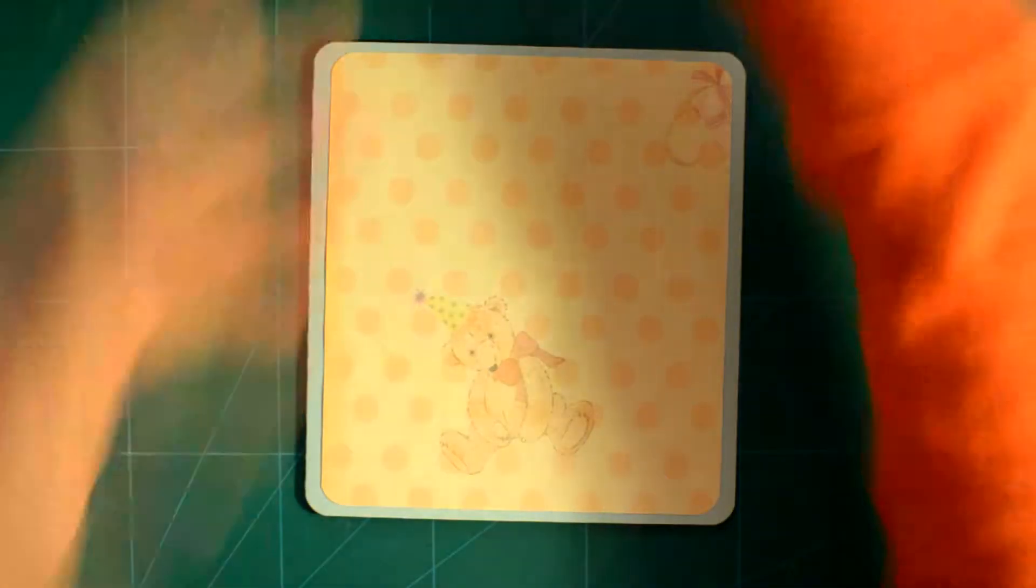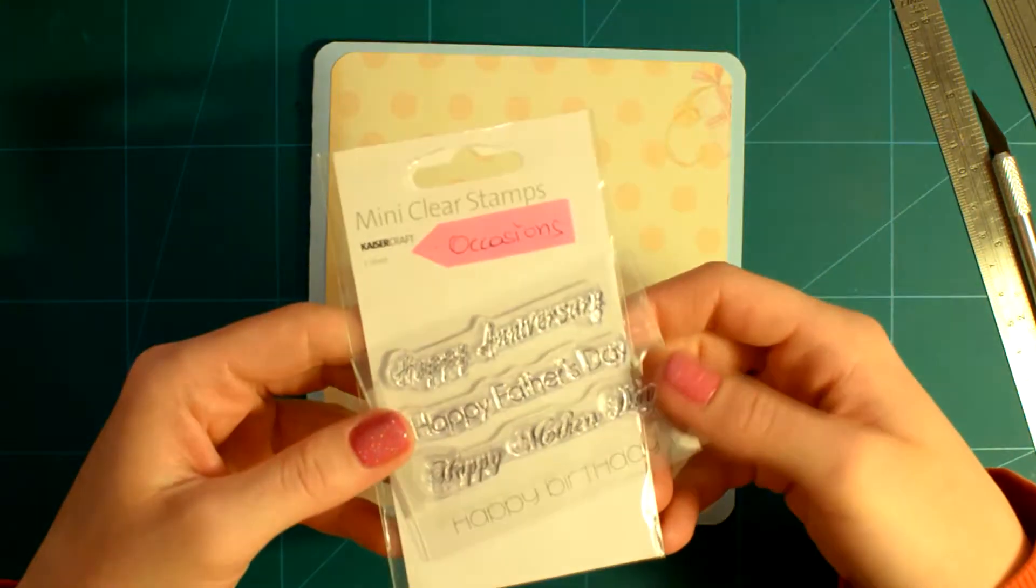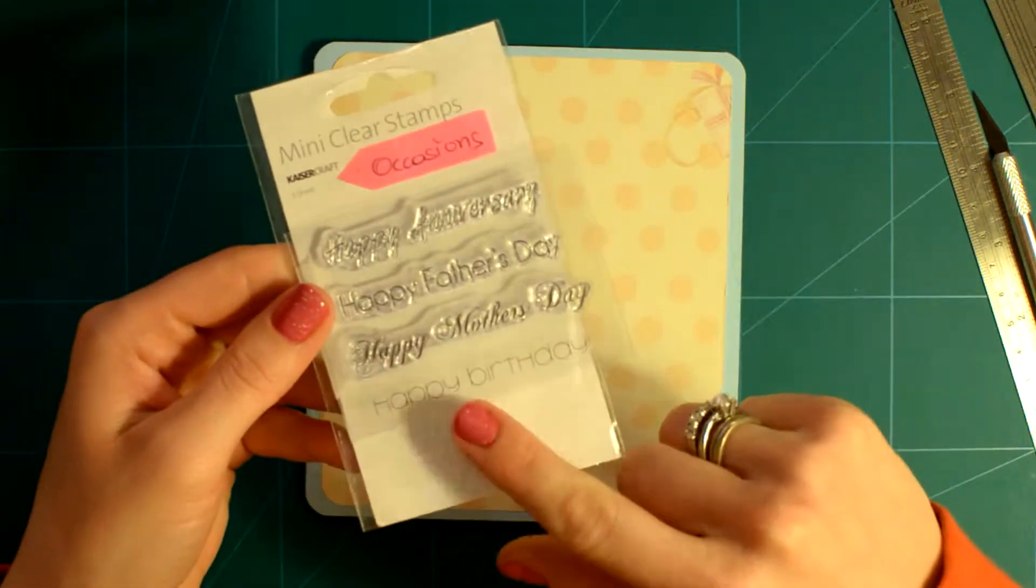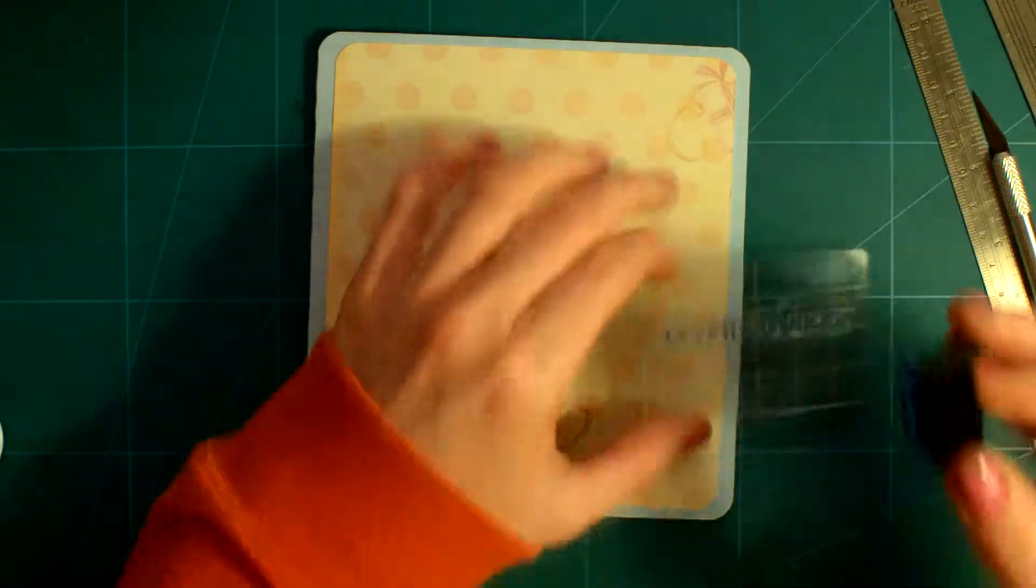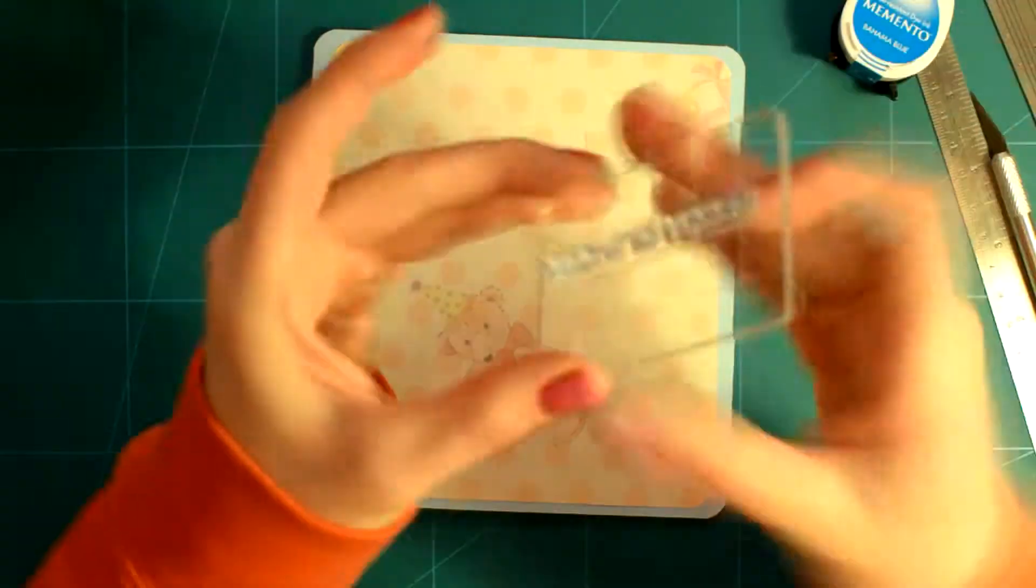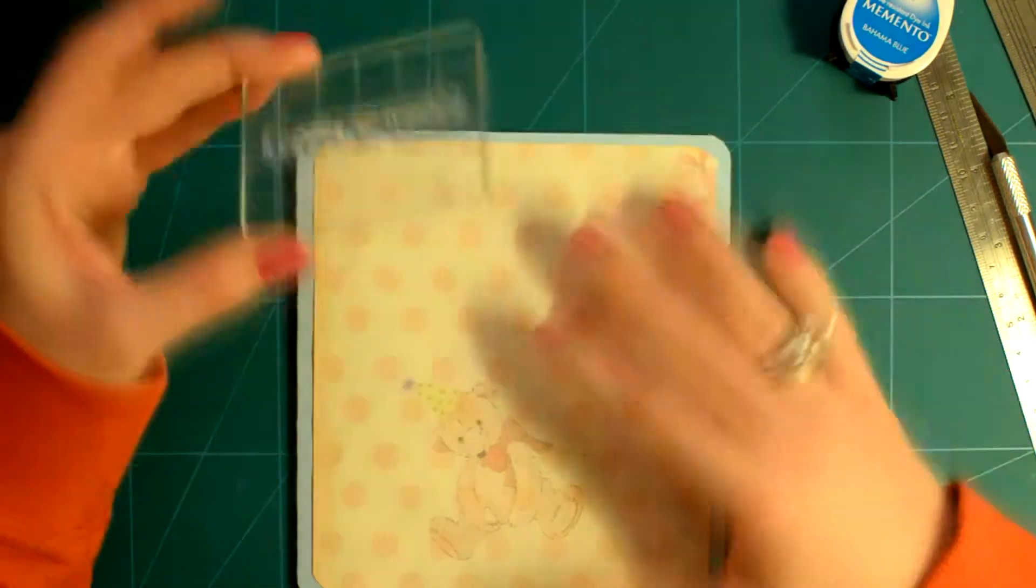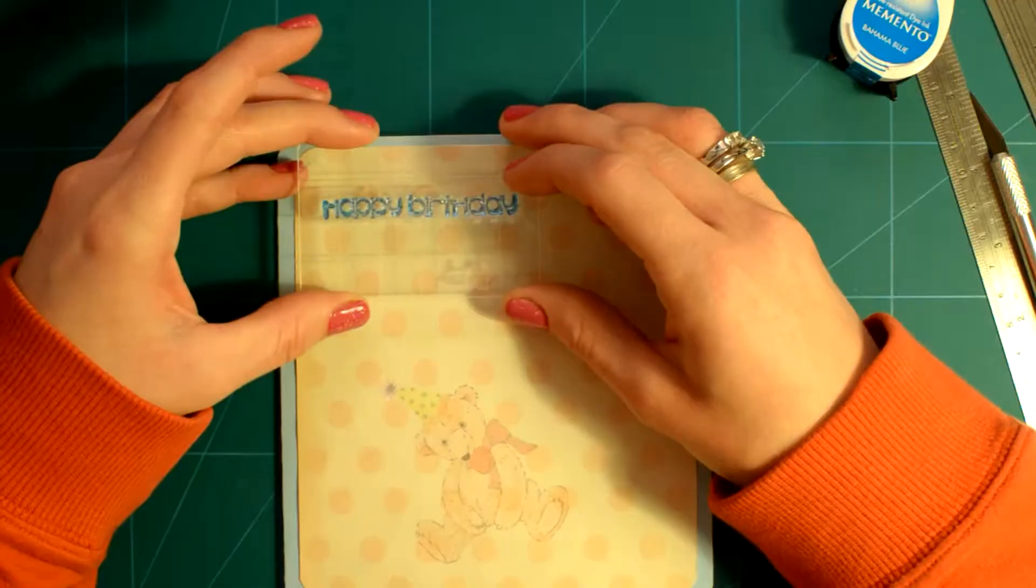I chose a Tsukiniko Memento Dewdrop dye ink in Bahama Blue to stamp my happy birthday sentiment, which is from Kaisercraft mini stamp set called Occasions, and the Let's Celebrate is from Lawn Fawns Plus One stamp set.